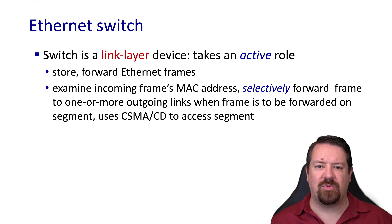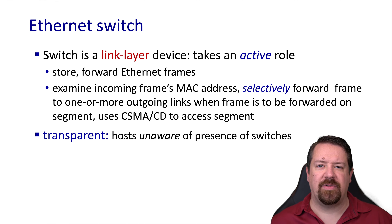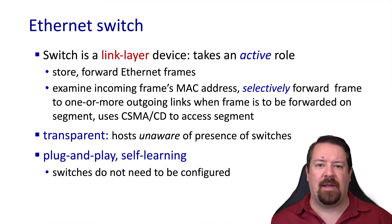The basic operation is that the switch looks at the destination address of the frame and determines what port or ports the frame should be forwarded to. In accessing the links, it will be using the CSMA/CD algorithm that's part of Ethernet. The operation of the switch itself is transparent, meaning that the hosts operate as if there is a direct connection between them. At least for basic functionality, switches do not require configuration and can operate in a plug-and-play manner due to their self-learning behavior.